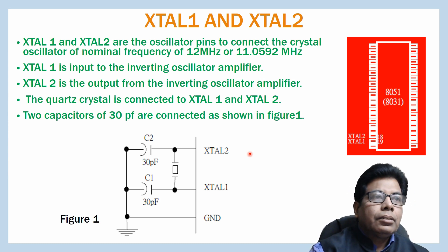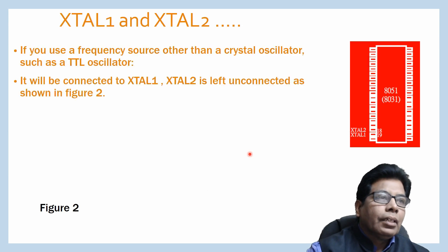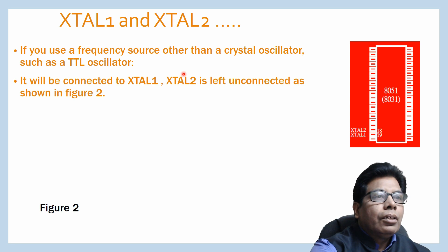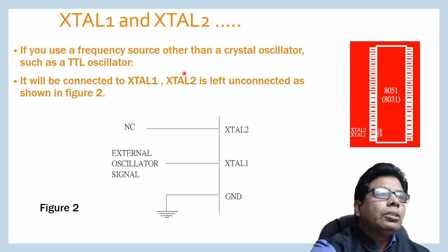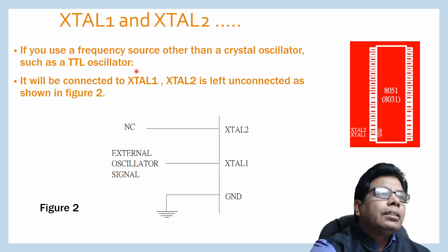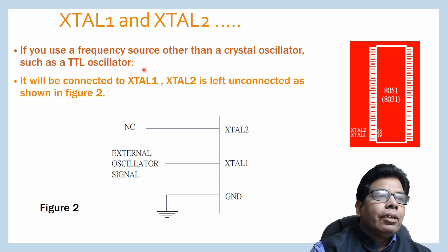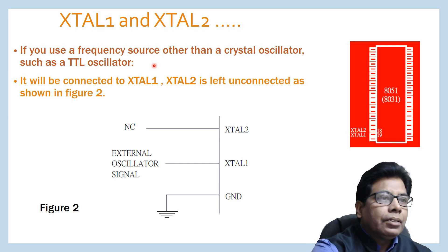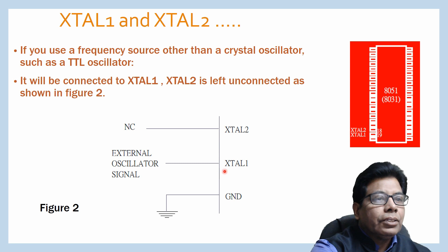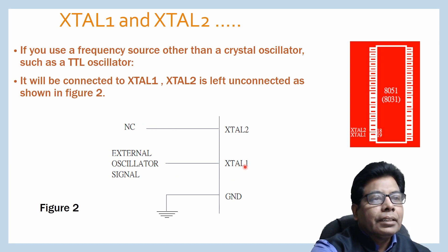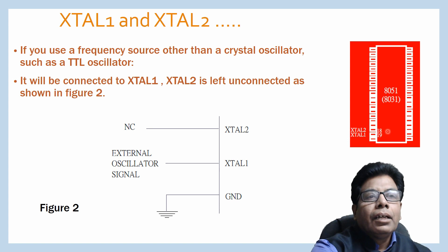Further, if you are going to use a frequency source other than the crystal oscillator, you can use a TTL oscillator. At that time it will be connected to XTAL1 and XTAL2 will be left unconnected. You can see here that XTAL2 has no connection and XTAL1 connects the external oscillator signal. The pins for XTAL1 and XTAL2 are 19 and 18.